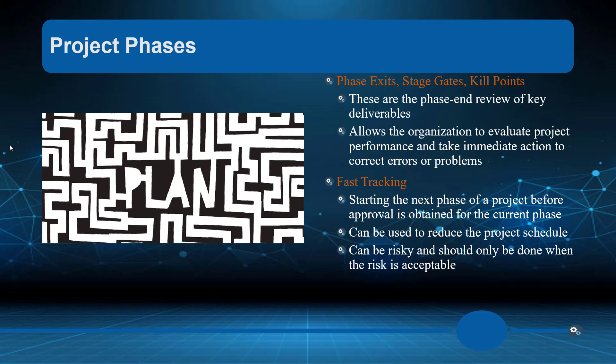I've spent time marketing the project — delivering to the people who are going to be affected or expected to use the system what great work we're doing, when they're going to see the product or service, and how it's going to positively impact their work and their dedication to the company. This allows the organization to evaluate project performance, take immediate action, correct errors or problems if they exist — asking those questions. Fast tracking means starting the next phase of the project before approval is obtained for the current phase.